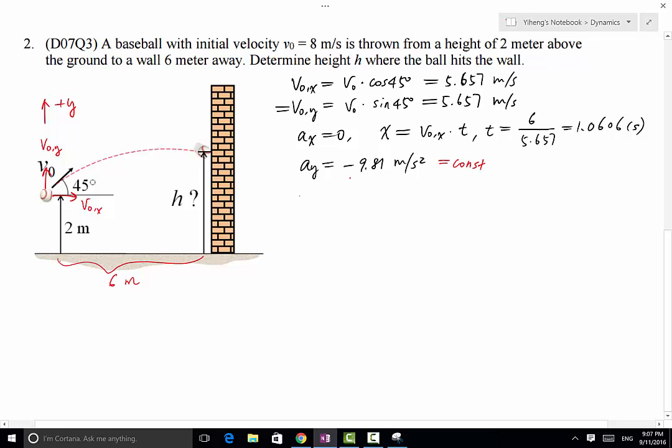So the three equations are, if you remember, Vy equals to V0y plus Ay times t. And then along the y direction, y equals to Y0 plus V0y plus one half Ay times t squared. And lastly, Vy squared equals to V0y squared plus 2 times Ay times y minus Y0.